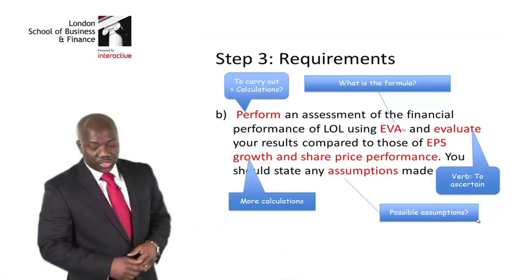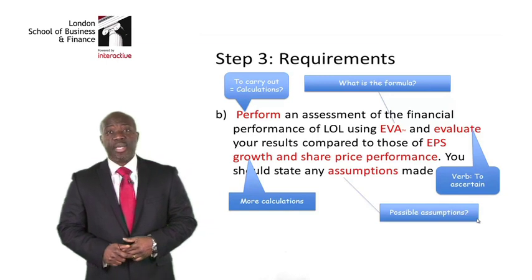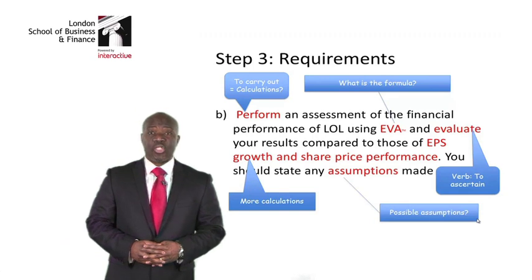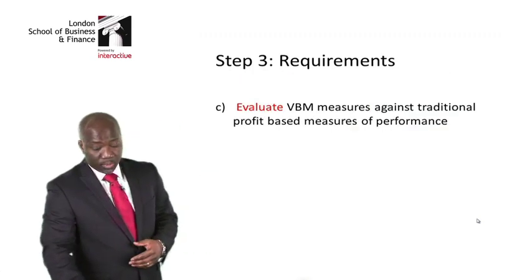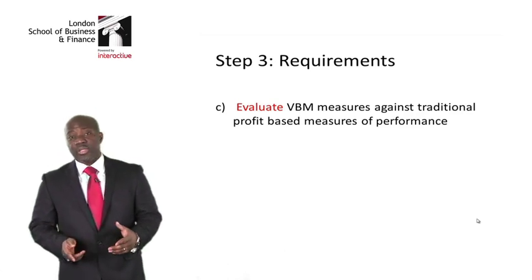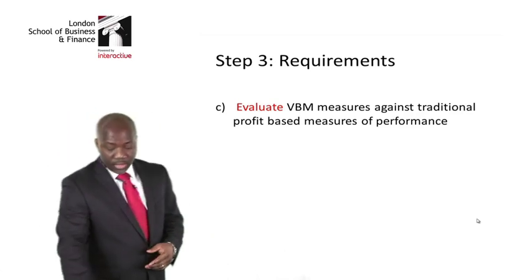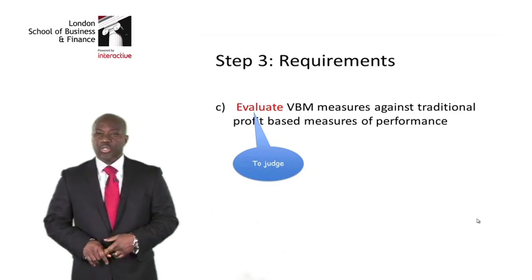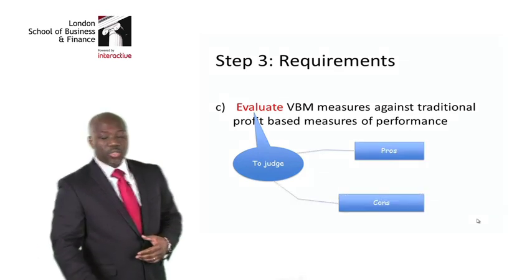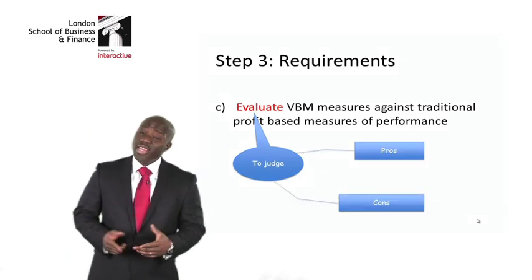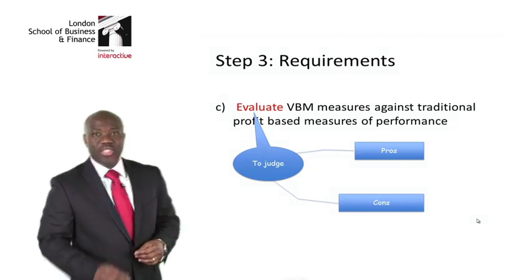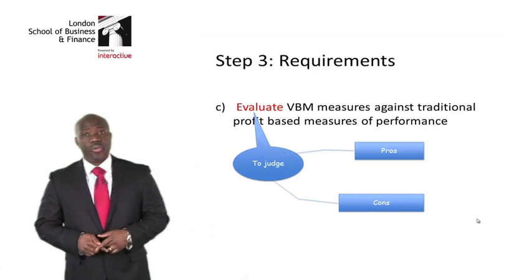I have also been asked to state any assumptions. Remember, the examiner wants me to state an assumption, so I need to find somewhere in the scenario to state any assumption that I make. Looking at part C, it is asking me to evaluate, which means to judge — and to judge means the examiner has asked me to talk about the pros and the cons. Once we have been able to break down the requirement into these parts, it makes it easier for us to go through the question with ease.